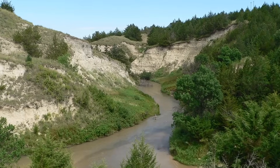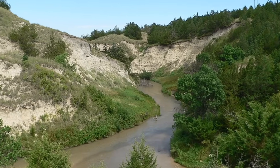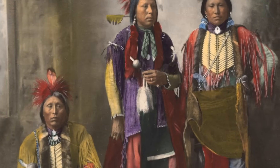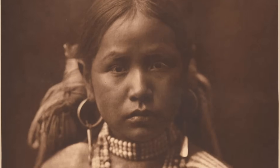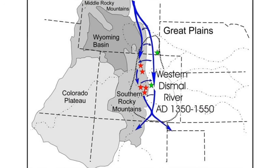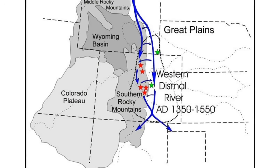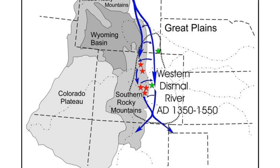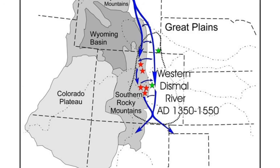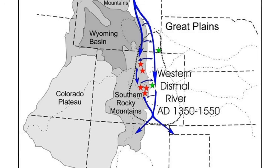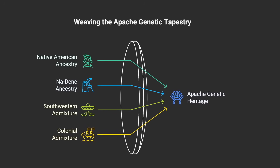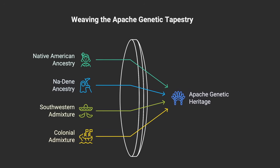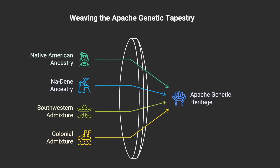Archaeological correlates of this migration include the Dismal River aspect, widely associated with historic Plains Apache groups — particularly the Kiowa Apache and closely related eastern Apache branches including the Jicarilla and Lipan. The material culture evidence suggests a migration route that brought Athabaskan speakers through the plains and mountain corridors before their diversification into the distinct Apache groups encountered by European explorers and settlers.